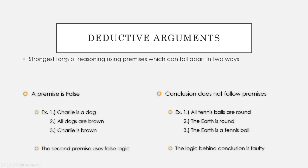Deductive arguments are the strongest form of reasoning using premises, which can fall apart in two major ways. One way is if one of your premises is false. For example: 'Charlie is a dog' and 'all dogs are brown' leads to 'therefore Charlie is brown' — but 'all dogs are brown' is false logic, so this argument falls apart because we used false logic in one of our premises.